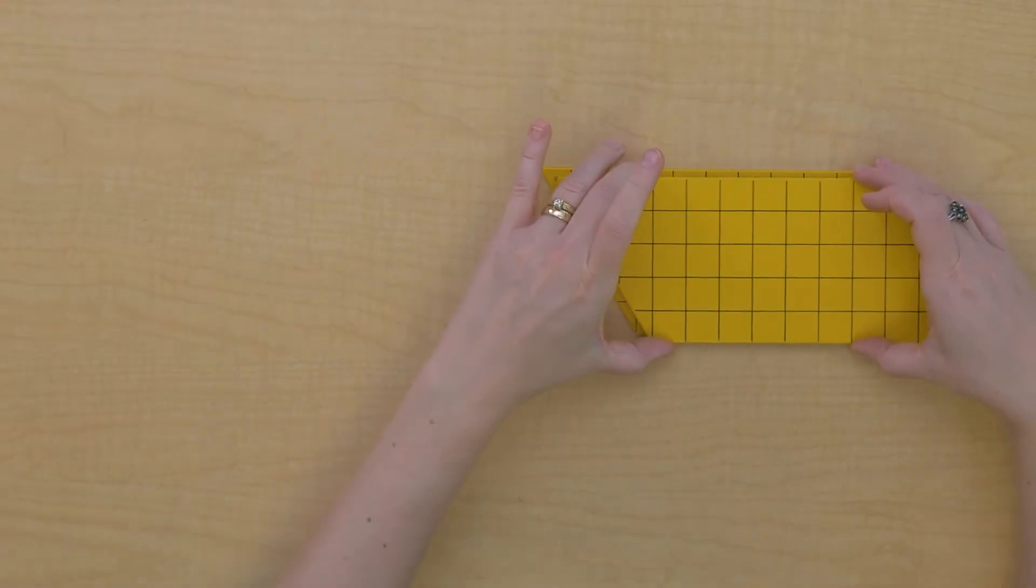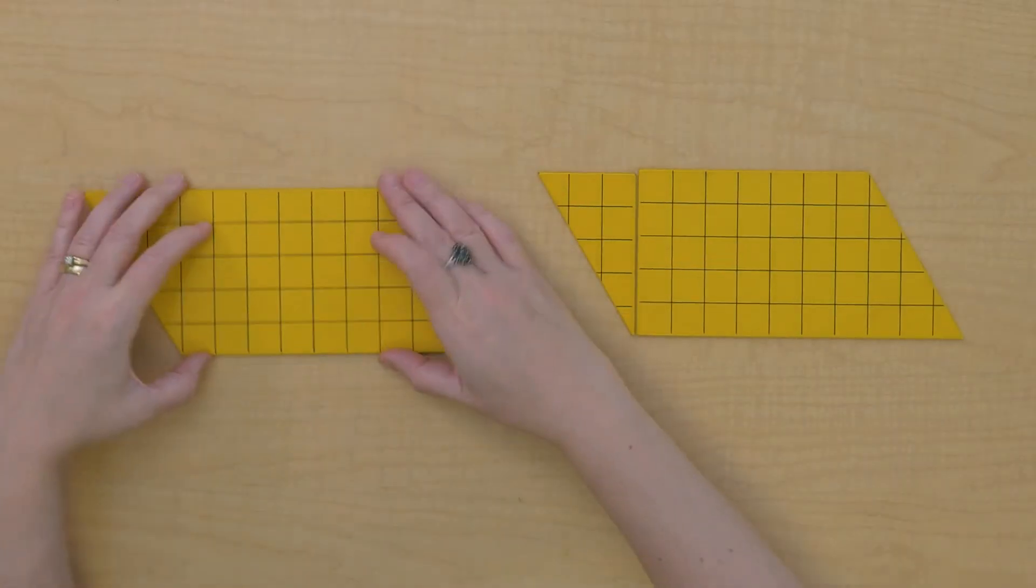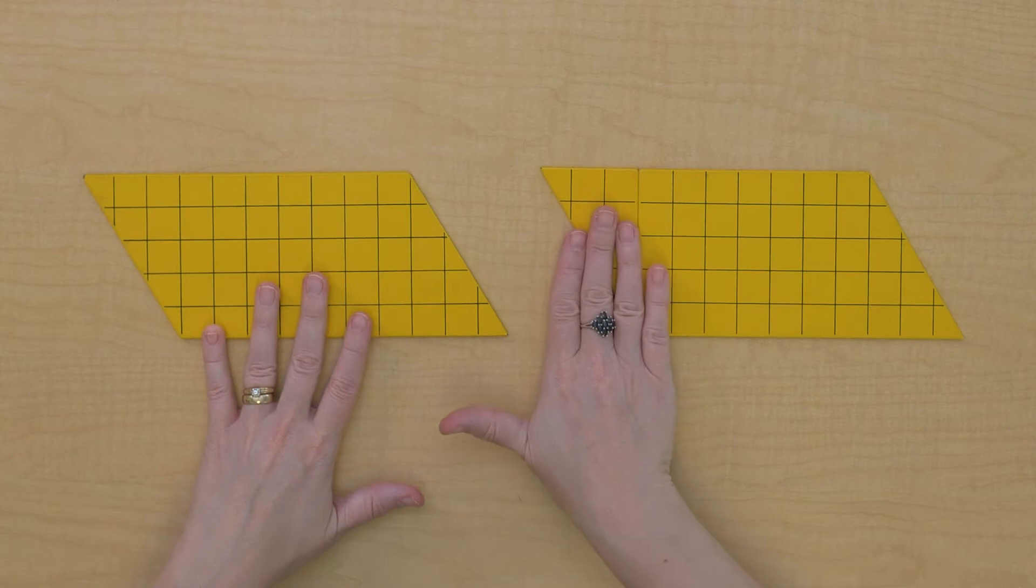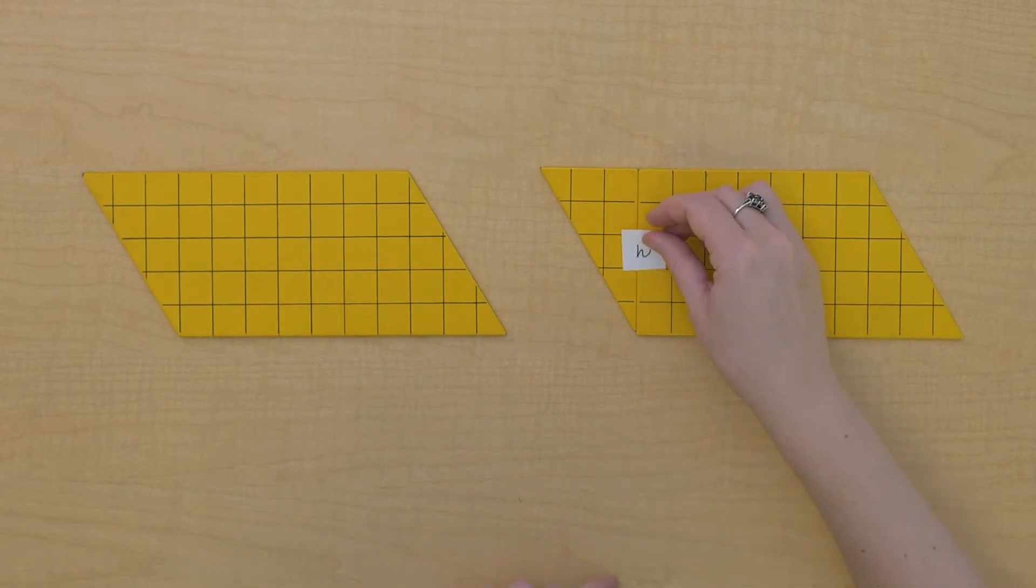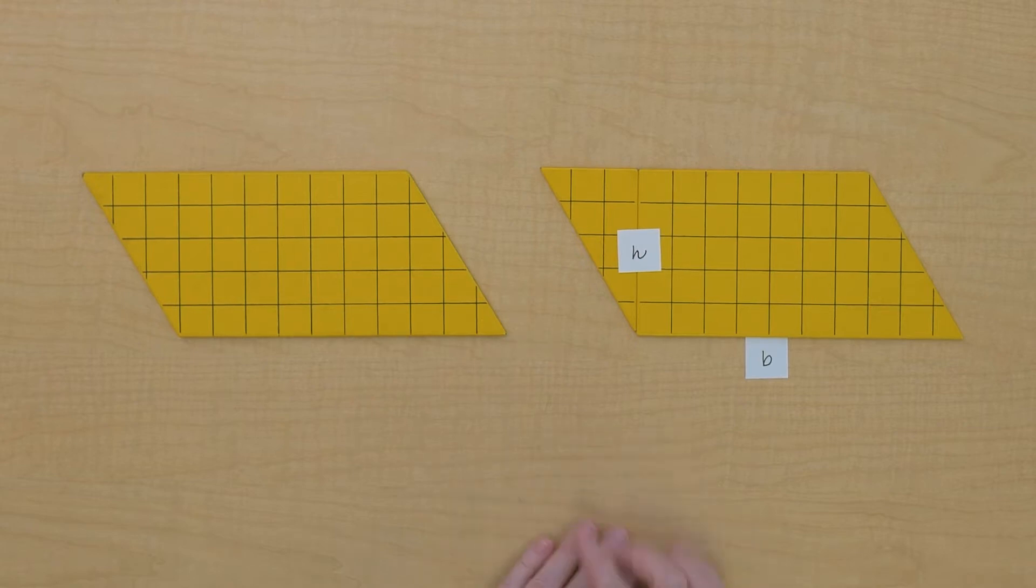Now let's see if we can find the formula for area of our parallelogram. We've got these two parallelograms that are equivalent. Let's take a look and see if we can find the base. Here's our base of our parallelogram, and here's our height right there.